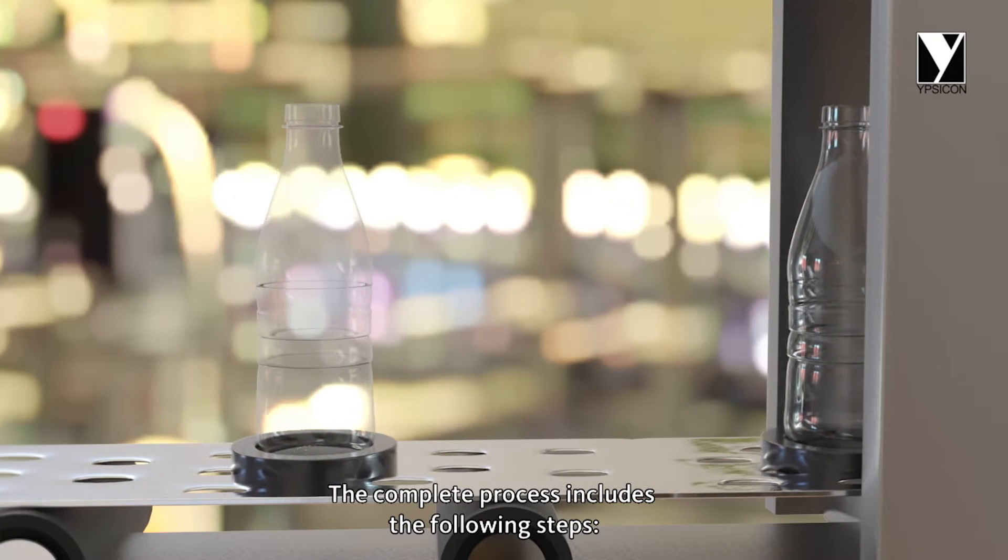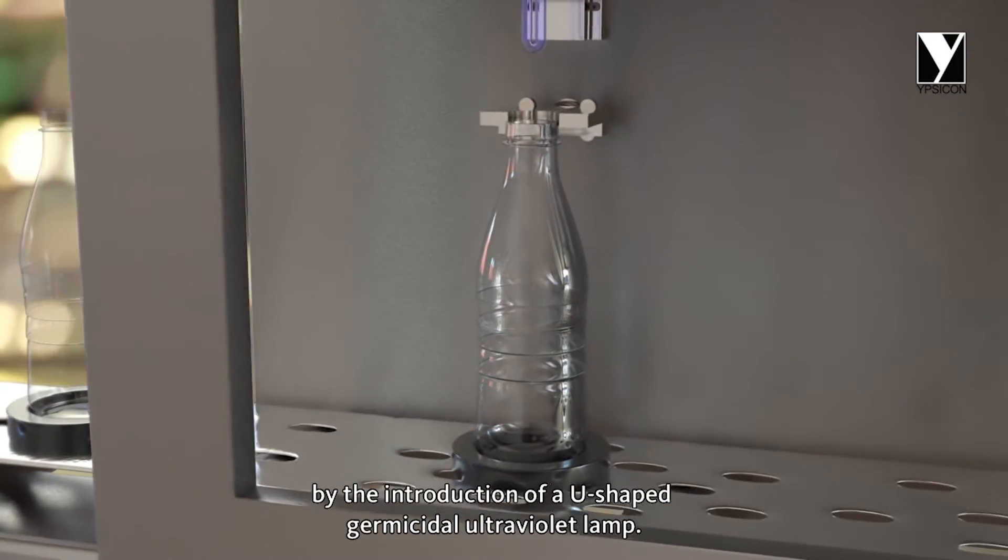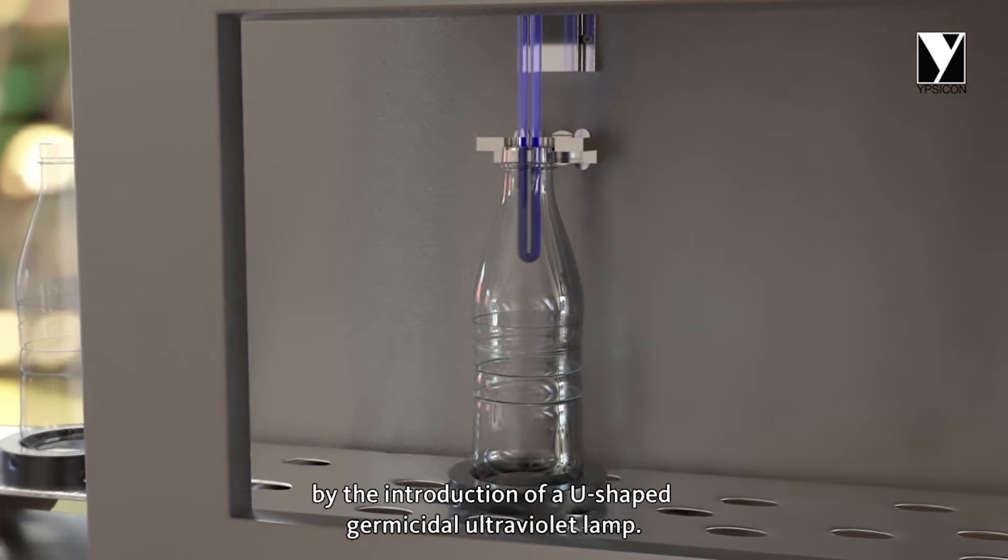The complete process includes the following steps. First of all, the inner surface of the bottles and caps are sterilized by the introduction of a U-shaped germicidal ultraviolet lamp.